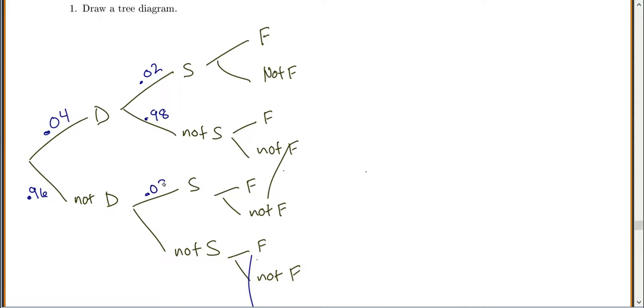Then we go through for all the Fs and not Fs. F had a 6% chance, so 0.06, and the complement of that is 0.94. Fill that in everywhere: 0.06, 0.94 for all the F branches.